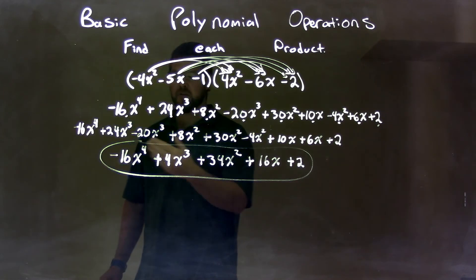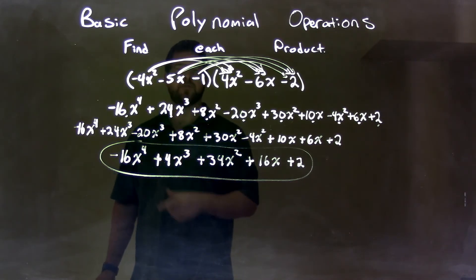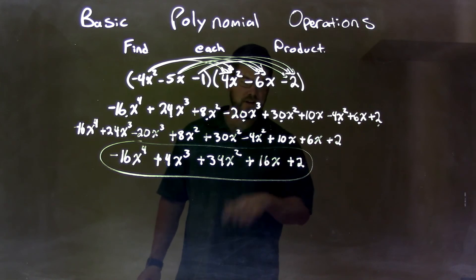And we got our final answer again of negative 16x to the fourth plus 4x to the third plus 34x squared plus 16x plus 2.